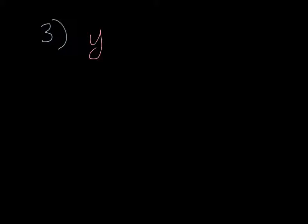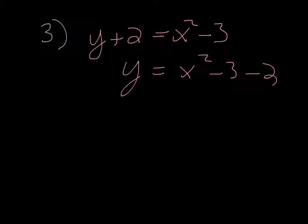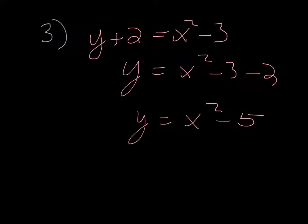Here's a more complex version: y plus 2 equals x squared minus 3. The negative 3 is not enclosed with x squared, so it's a vertical shift. Move everything to the right side: y equals x squared minus 3 minus 2, which simplifies to y equals x squared minus 5. So this is a shift down 5 units.